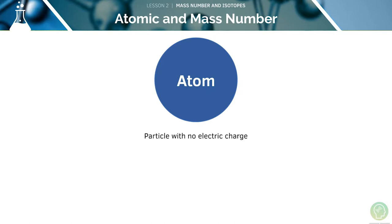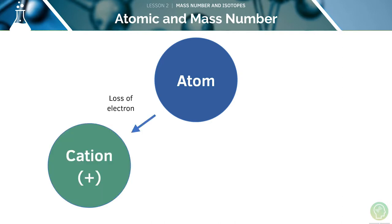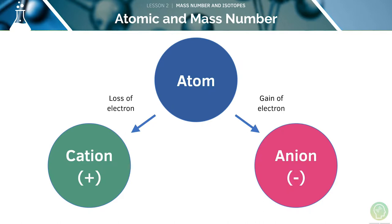An atom is a particle without any electric charge, where the number of protons equals the number of electrons. An ion is a particle with an electric charge — it can be an atom or a group of atoms, and can be positive or negative. When an atom loses an electron, it forms a positive ion called a cation. When an atom gains electrons, it forms a negative ion called an anion.